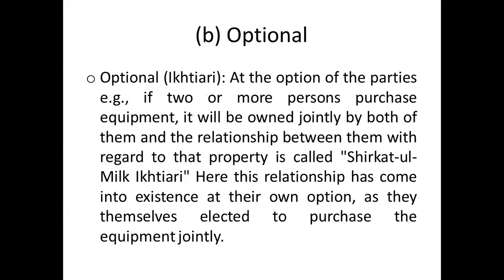Optional partnership is a partnership that becomes effective with the action of the parties. For example, if the parties jointly purchase any particular asset, or jointly accept a particular gift or bequest — if two or more persons purchase equipment, it will be owned jointly by both of them. This relationship is called Sharika al-Milk al-Ikhtiari, as it comes into existence at their own option and will, as they themselves elected to purchase the equipment jointly.